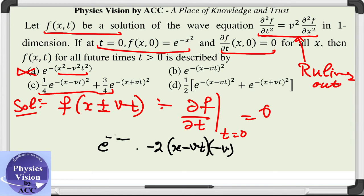And if we put t is equal to 0, this exponential factor will give you 1 and this vt will give you 0. So you will be left out with plus 2 x v.